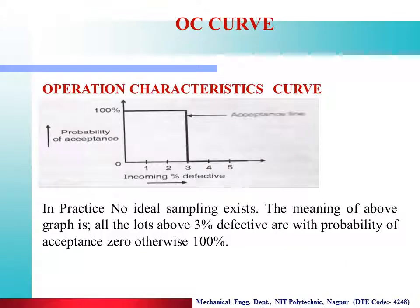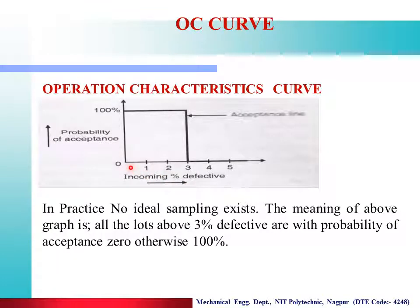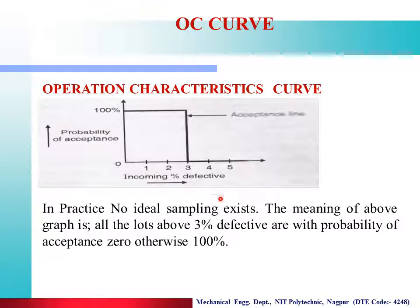This is a Normal or Ideal Operating Characteristics Curve. On the Y-axis, there is Probability of Acceptance, and on the X-axis, there is Incoming Percentage Defective. Suppose in the lot there are 3% defectives — the Probability of Acceptance of that lot is 100%. In practice, no Ideal Sampling Plan exists.